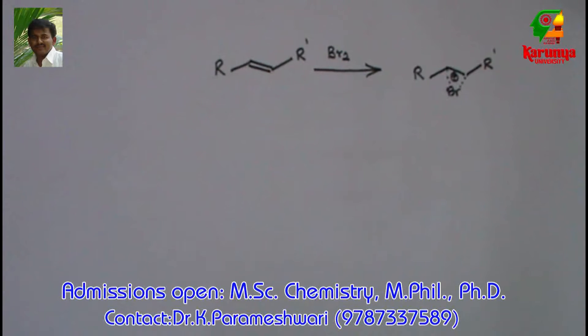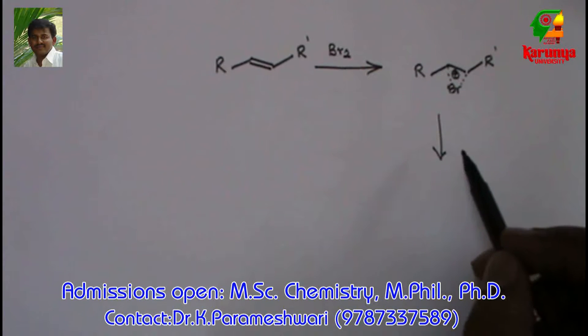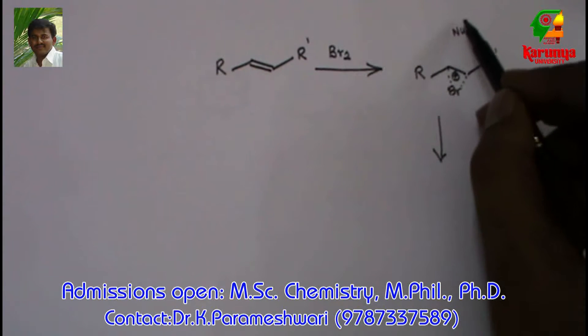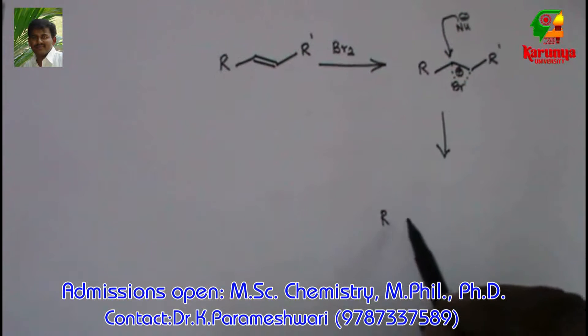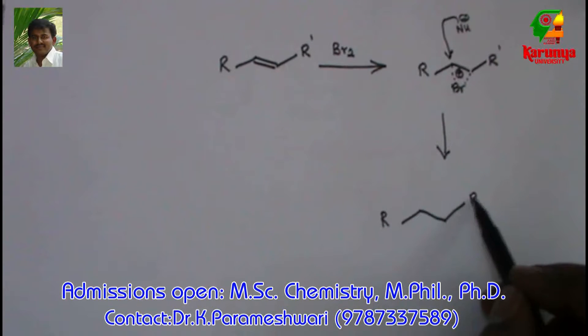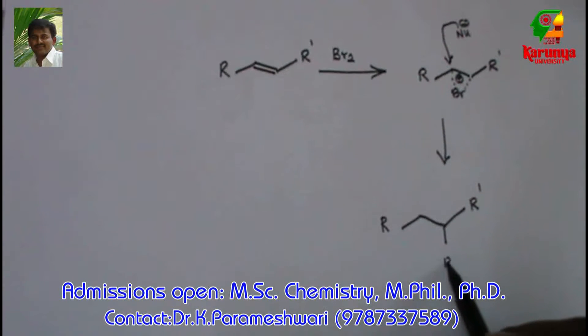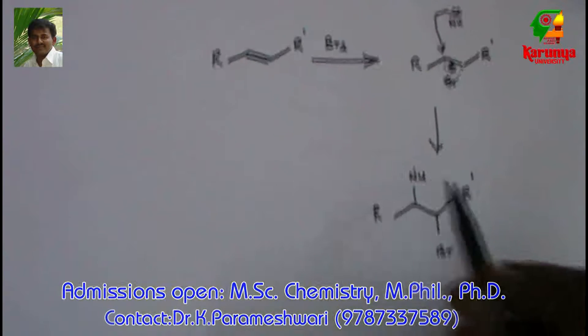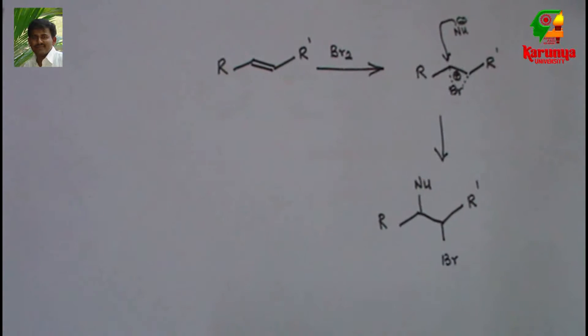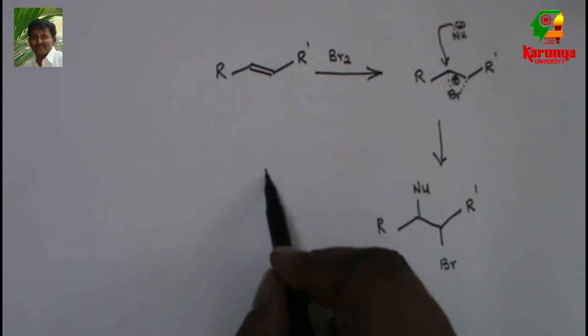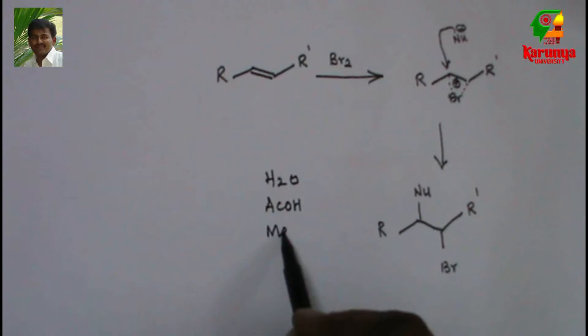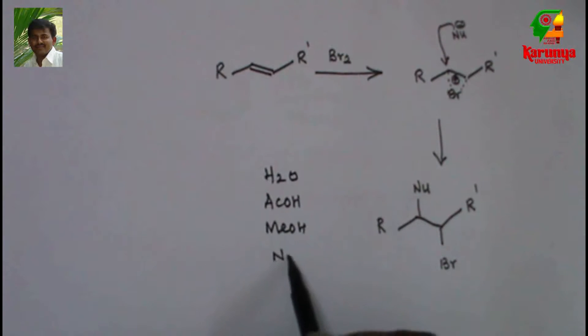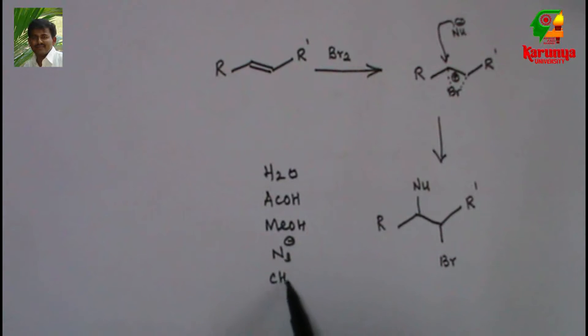Now the nucleophile will attack from the opposite side to give a product in which bromine and nucleophile are trans. The nucleophile may be water, acetic acid, methanol, azide, acetonitrile, and so on.